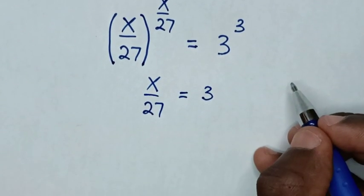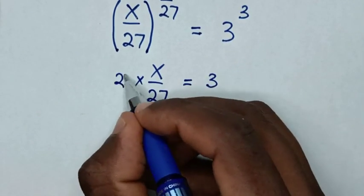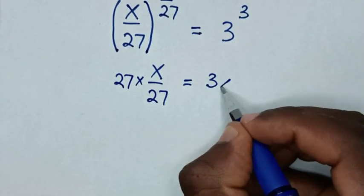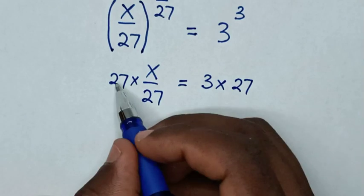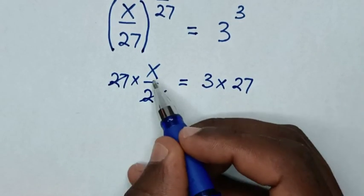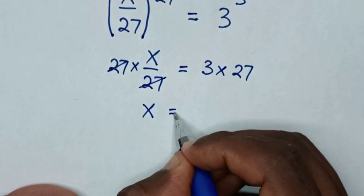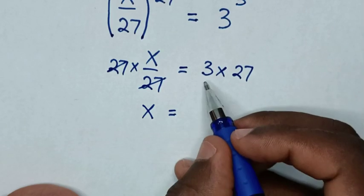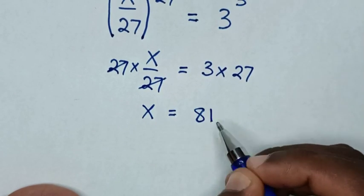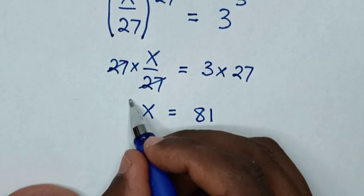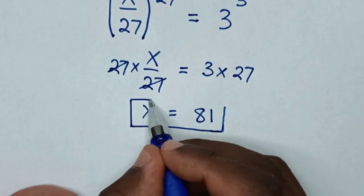In the next step, to find the value of x, we will multiply by 27 on both sides. The 27 cancels, and it will be x is equal to 3 times 27, which is 81. So this is the final answer for the value of x in this problem.